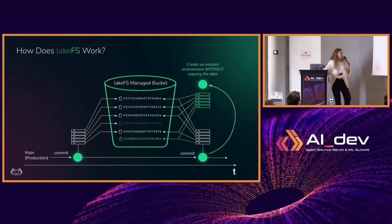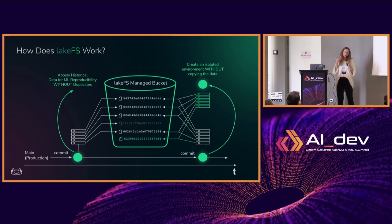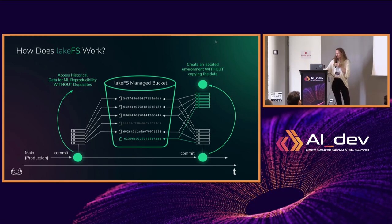Opening a branch is simply pointing to a commit ID — exactly how it works in Git — which takes about three milliseconds. You have an isolated data environment to work on, and if you're a hundred people you can create millions of branches as you go. It's highly scalable — it's just a pointer. For reproducibility, you simply mention the commit ID and go to that set of pointers that brings you the right data. It works with petabytes, hundreds of petabytes, even exabytes of objects — it's very scalable.